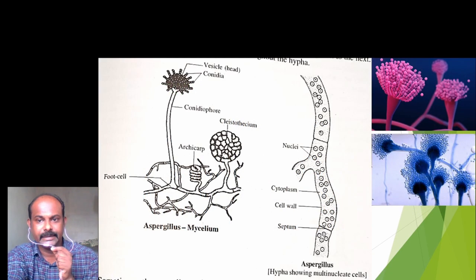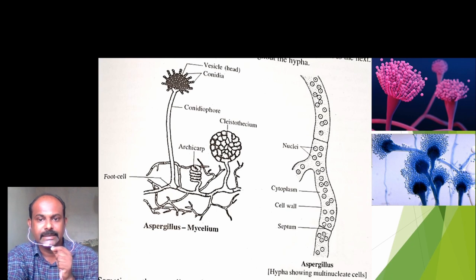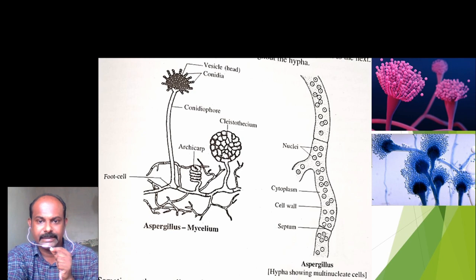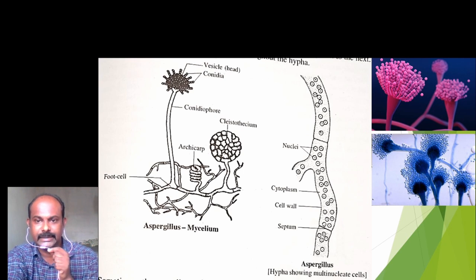These figures show the vegetative and reproductive structures of Aspergillus. You can see the highly branched septate mycelium from which asexual as well as sexual structures are formed. In the second figure you can see that each cell is multinucleate. You can also see the micrographs of the conidia which are formed on conidiophores.